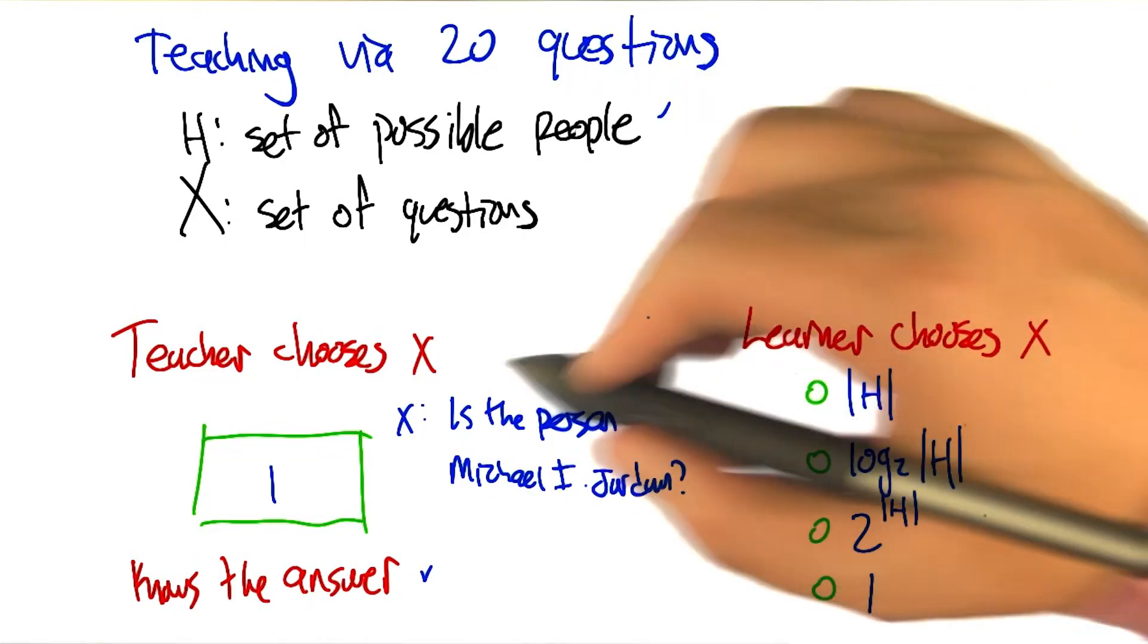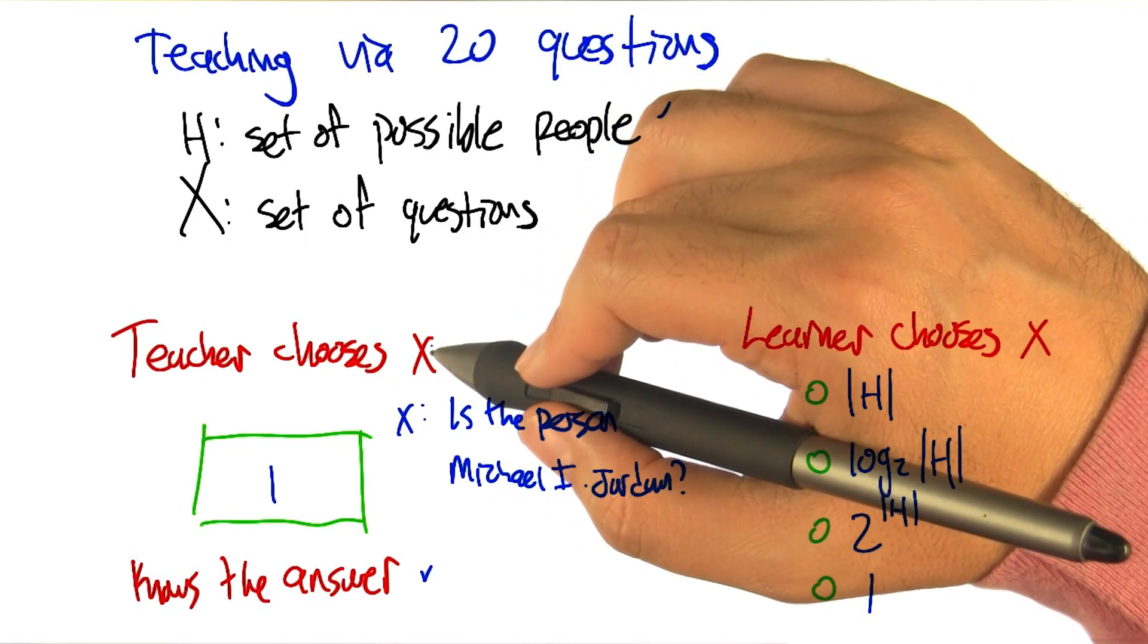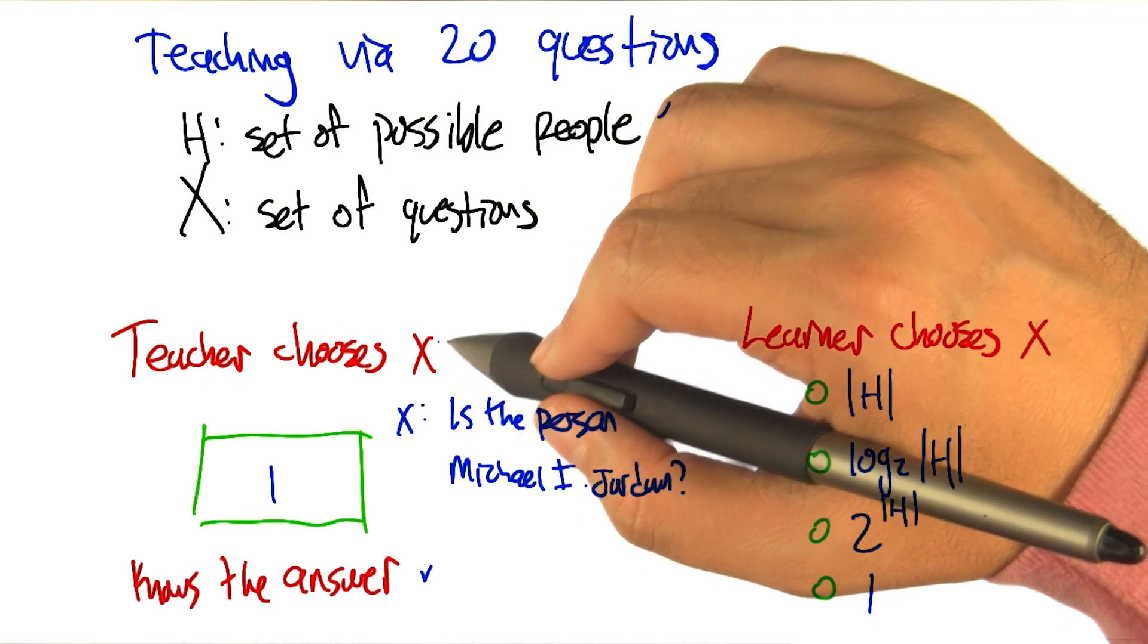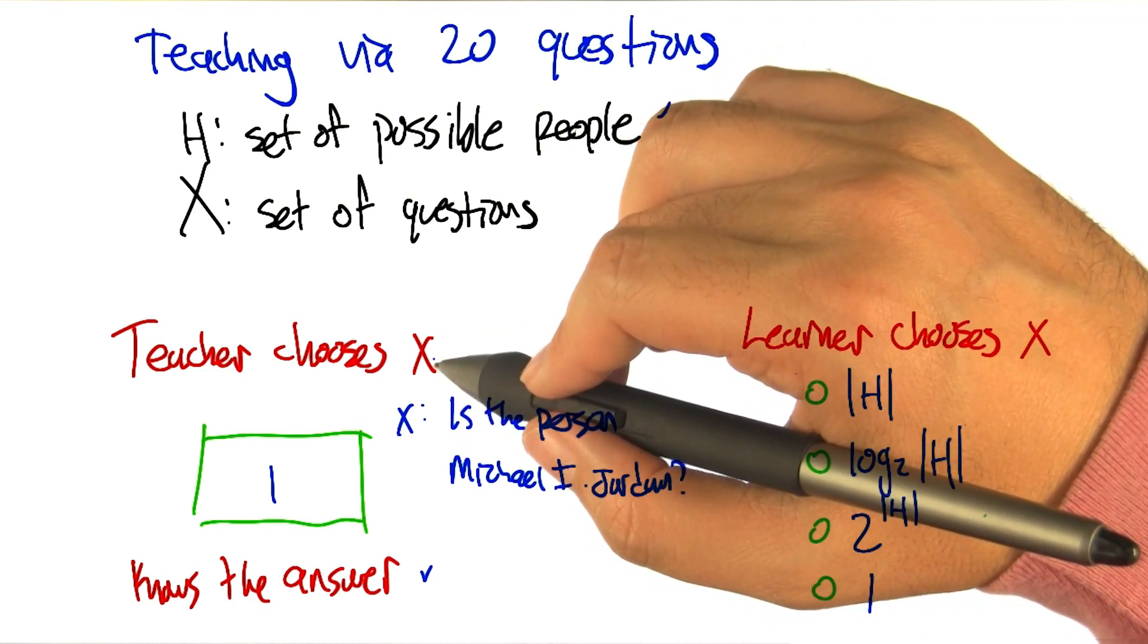All right, so the learner, if the learner is choosing which questions to ask, the learner is in a distinctly more difficult situation, because it doesn't actually know what the right answer is.